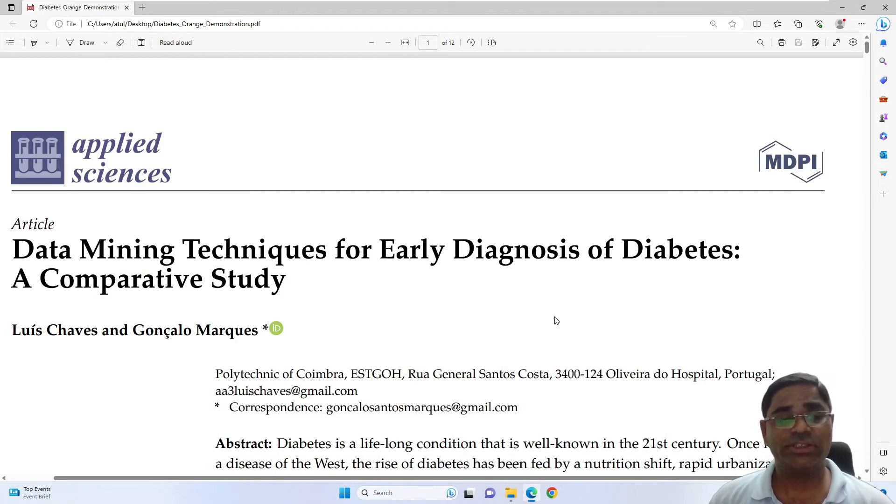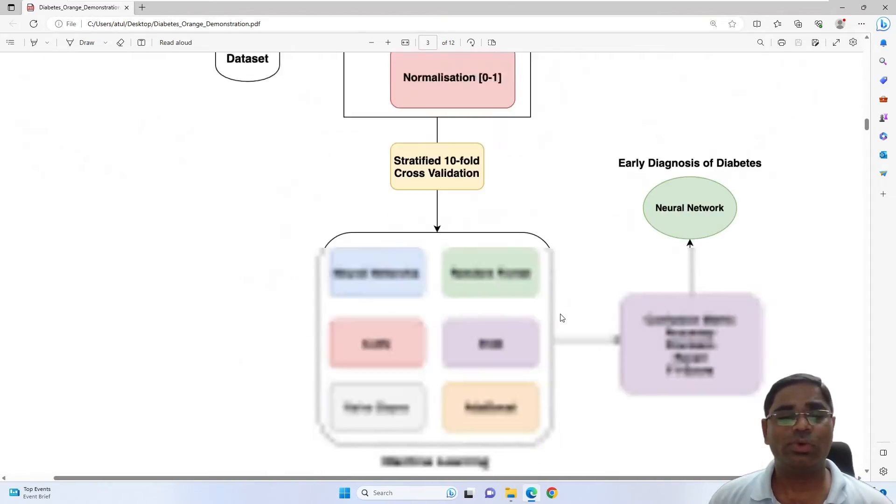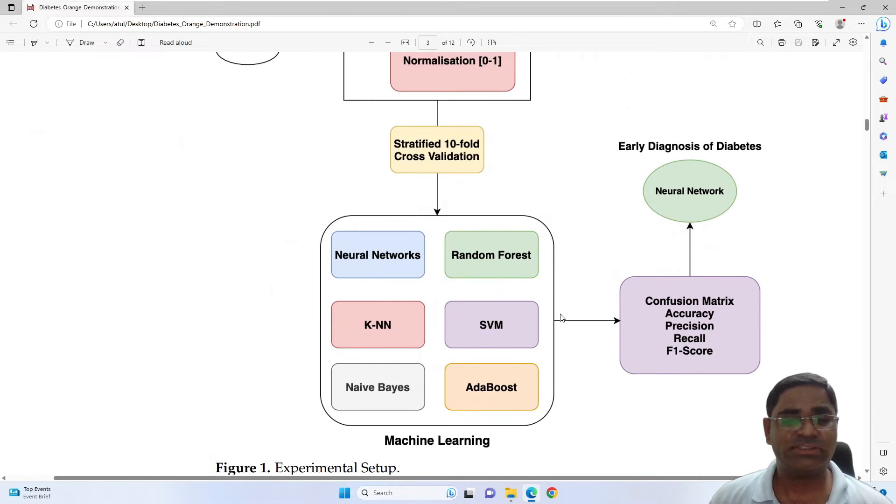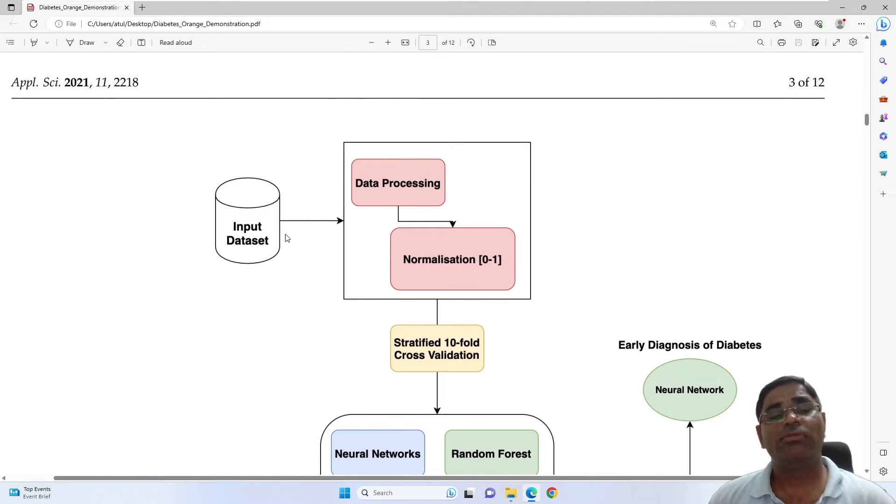So after downloading the dataset, if we go to the workflow, this is the experimental setup. Once we provide the input dataset, we will preprocess it. In preprocessing, we are only using one feature, that is normalization. Normalization means we categorize the data between 0 to 1.